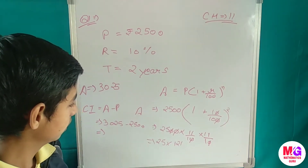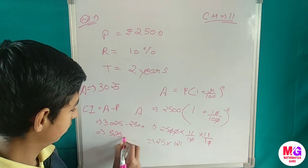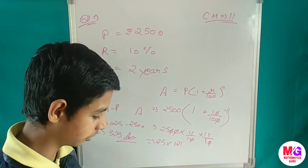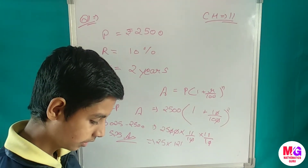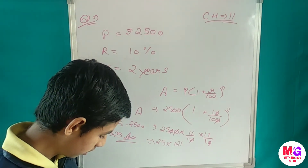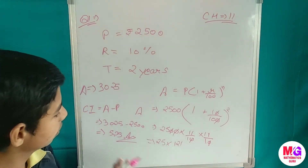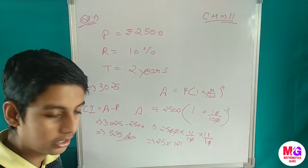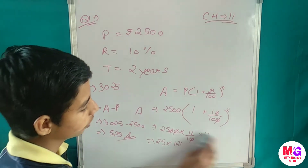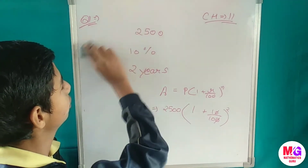So we get 525 as our answer. In this question we had to find the compound interest, so 525 rupees is the answer to question number one. Now let us look at question number 2.